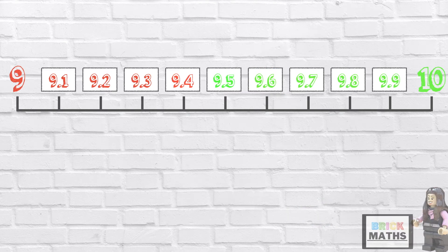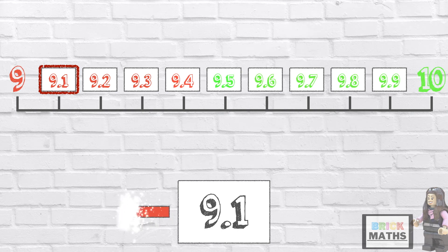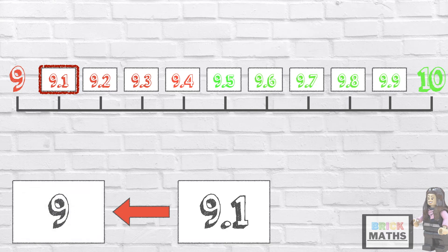The next number is 9.1. It sits between 9 and 10. Because it ends in 1, we round the decimal down to the previous whole number, which was 9.